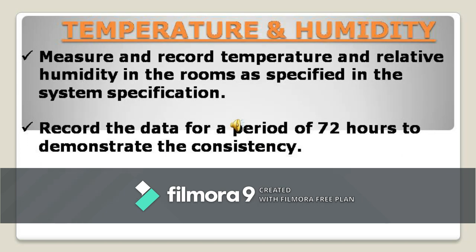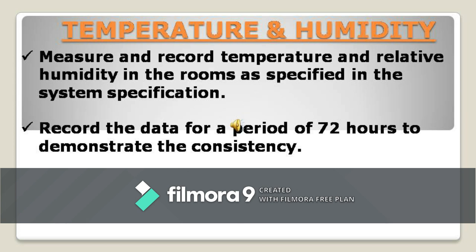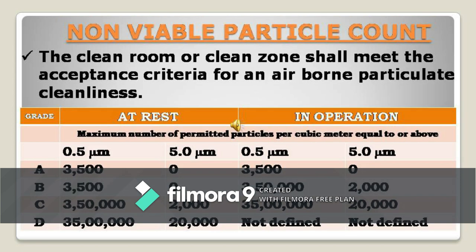The next test is environmental monitoring — temperature and humidity. You need to record humidity and temperature for a period of 72 hours to demonstrate consistency. The acceptance criteria will be as specified in your system specification for the particular area; temperature and humidity should be within the defined range.